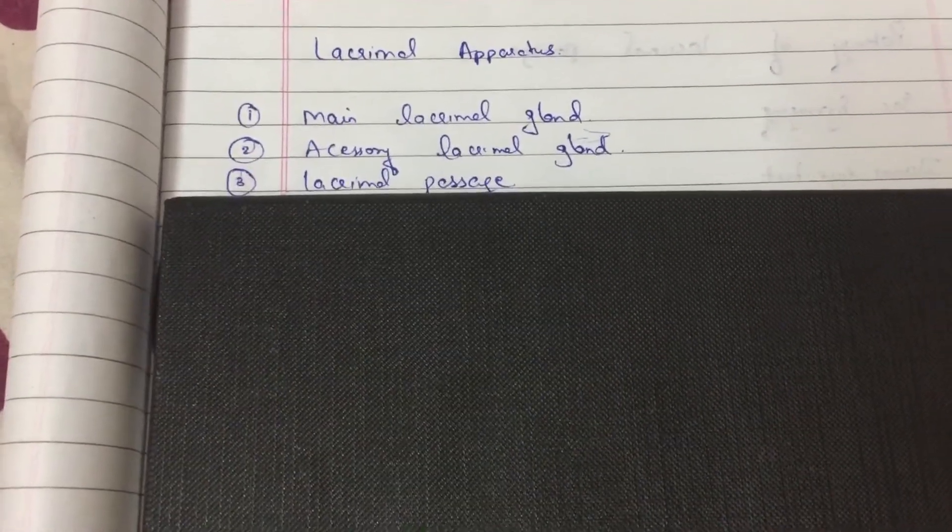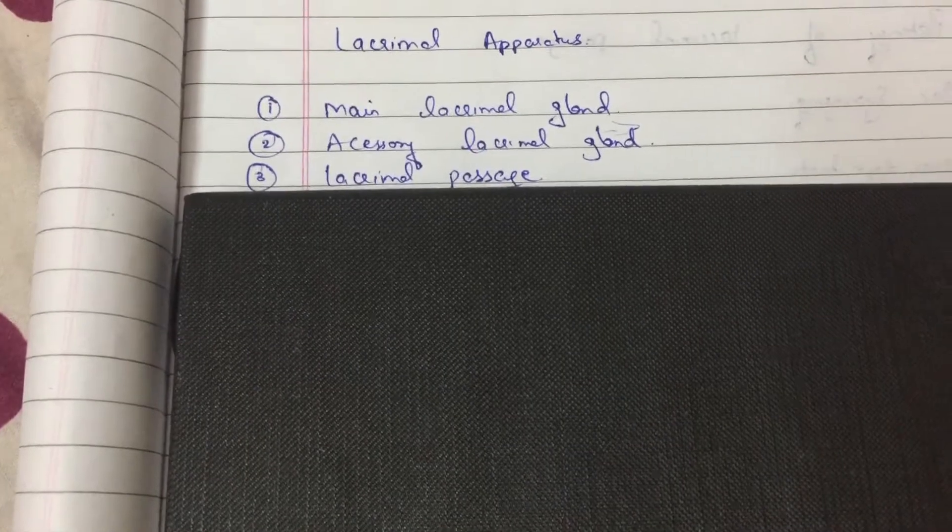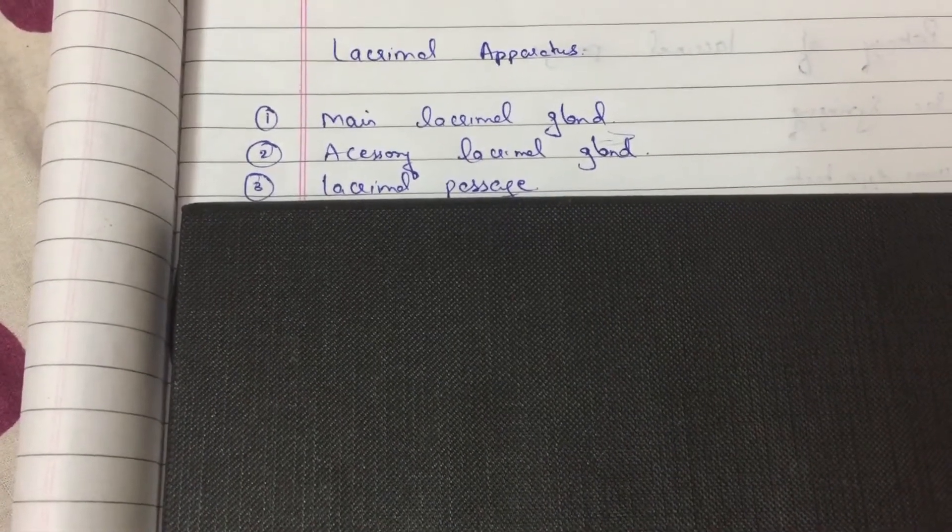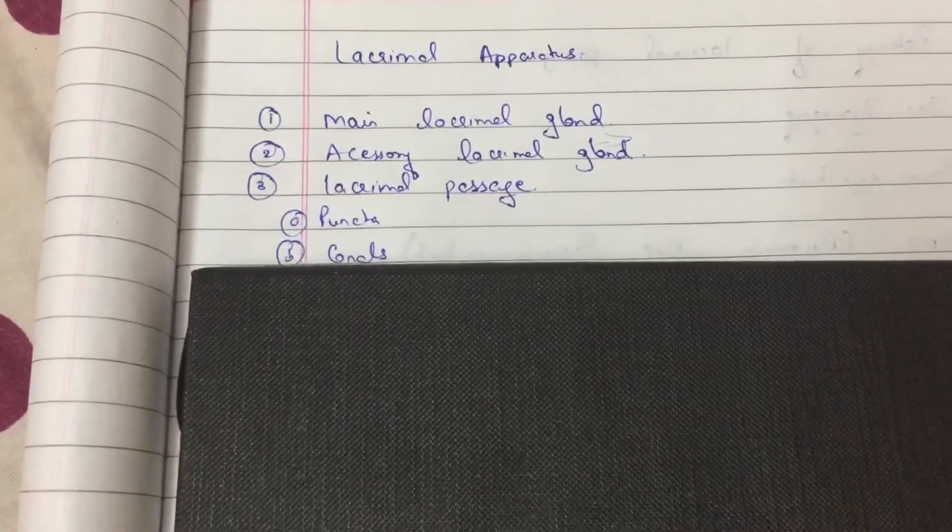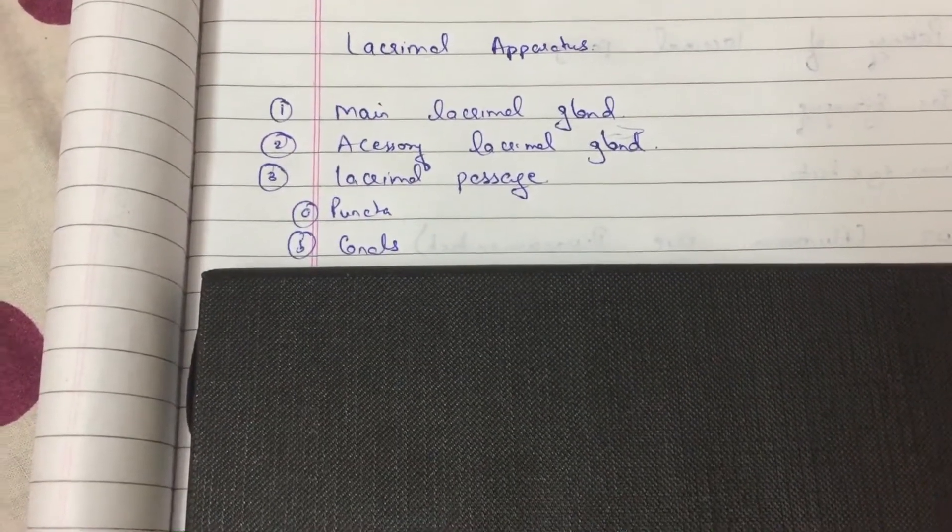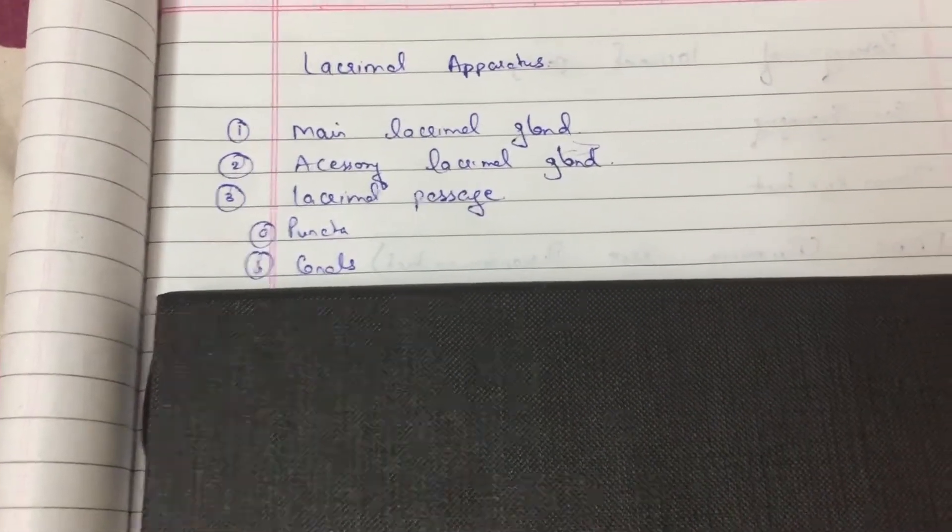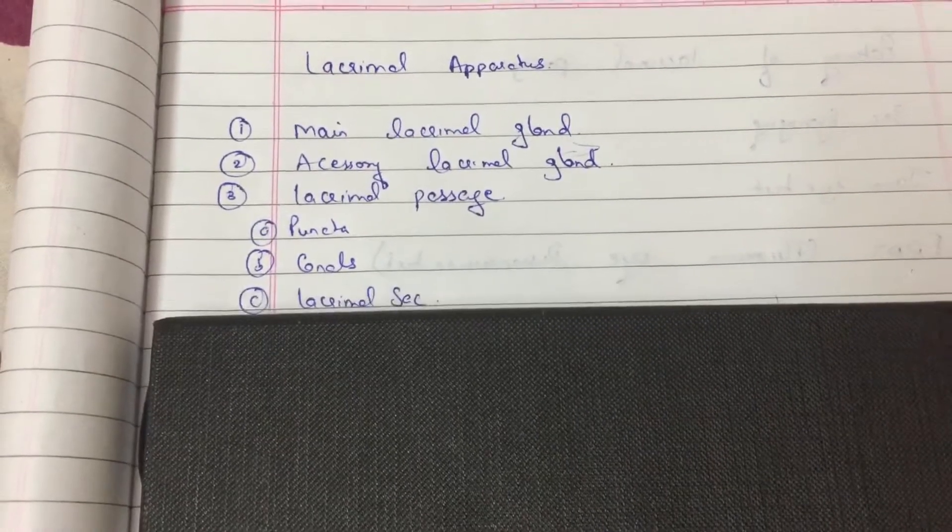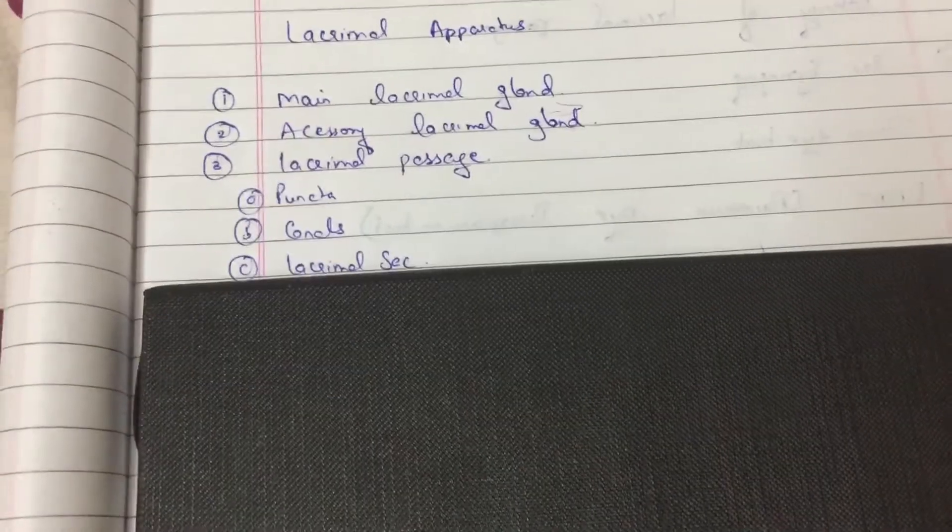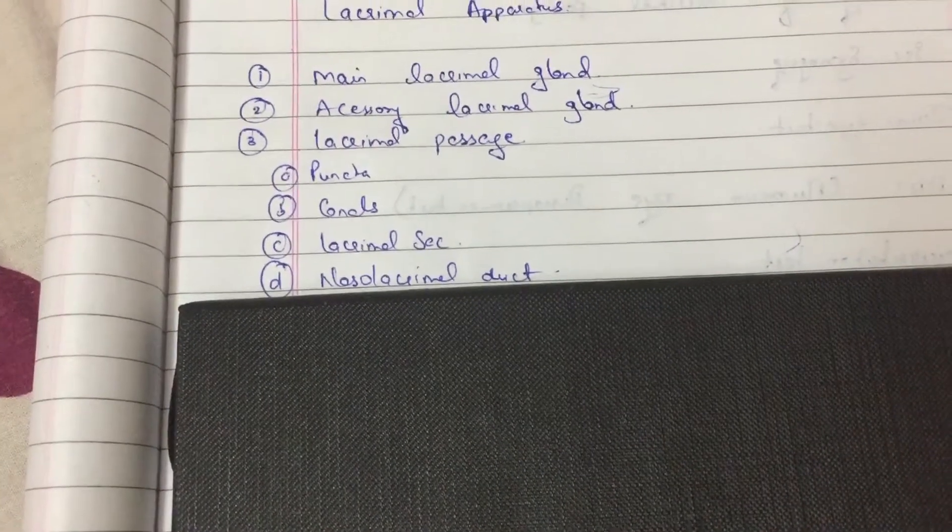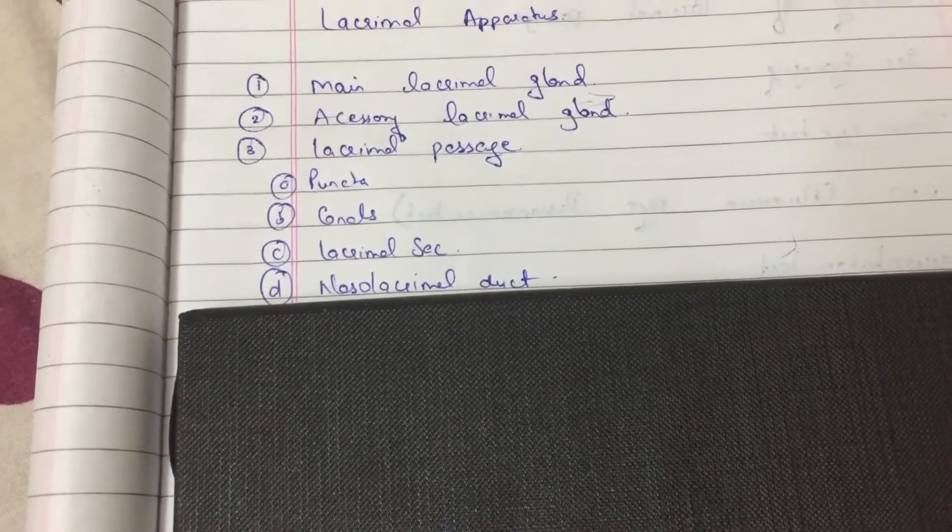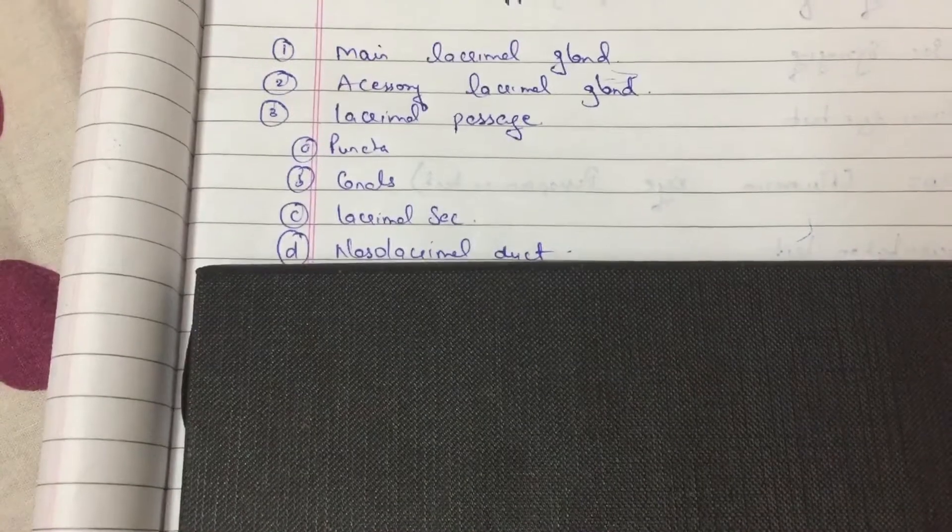The third is lacrimal passage. This lacrimal passage is very much important for the drainage of the tear. It starts with the two puncta which open into the canals. There are two canals, upper and lower canals which together form a common canal. This common canal now opens into lacrimal sac and ultimately this lacrimal sac goes into the nasolacrimal duct. And this nasolacrimal duct ultimately ends at the posterior nasal meatus.